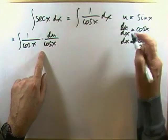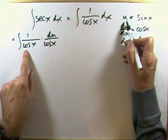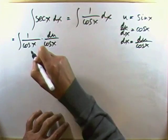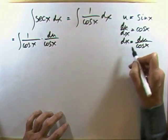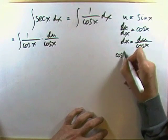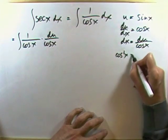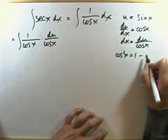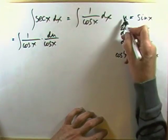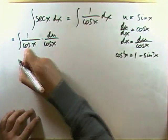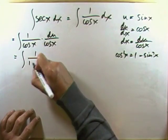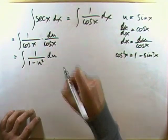Since I'm changing variables, everything has to be expressed in terms of u. So cos squared x can be changed into sines, because cos squared x plus sin squared x equals 1, so cos squared x equals 1 minus sin squared x. And since sin x equals u, that's 1 minus u squared. So the integral becomes 1 over 1 minus u squared du.